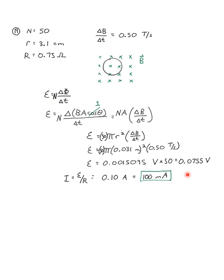Then we want to know the current, so we're going to divide by the resistance of 0.75 ohms, and we get 100 milliampers.